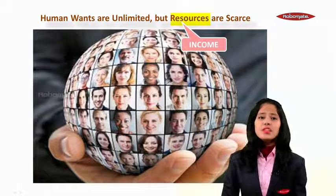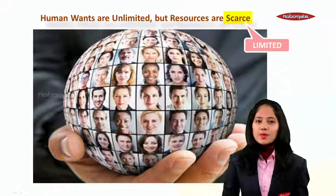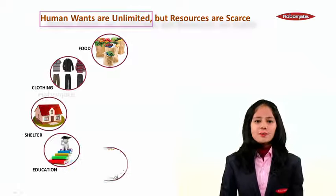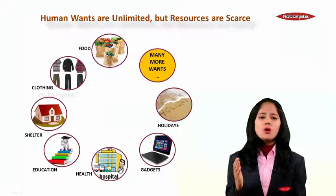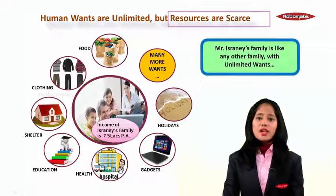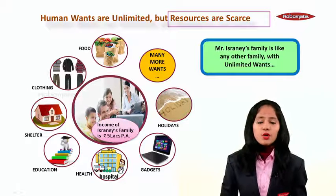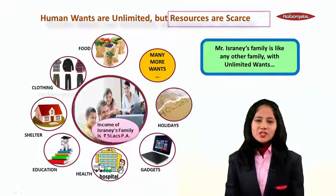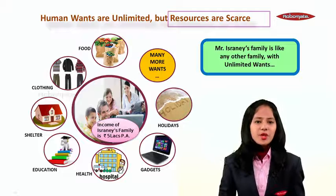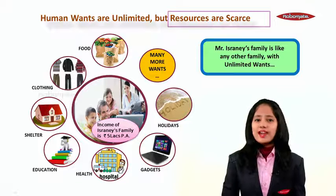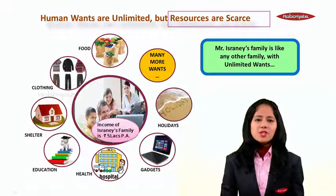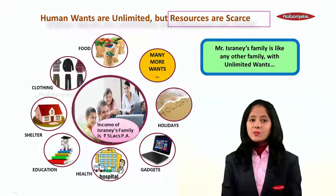Money to deal with these unlimited wants is limited. Let us understand this better. A family has unlimited wants and unlimited expenses to make. For example, Mr. Israni has to spend on food and grocery, clothing, shelter, education, and health — these are some of the basic necessities of life. Apart from this, there are expenses on gadgets, holidays, electricity bills, insurance premiums, and many more wants.